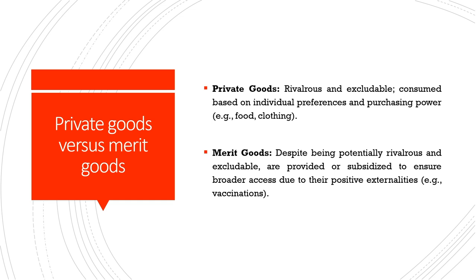We can also distinguish private goods from merit goods. Private goods are rivalrous and excludable, consumed based on individual preferences and purchasing power. Merit goods, despite being potentially rivalrous and excludable, are provided or subsidized to ensure broader access due to their positive externalities. Vaccination is a key example: it is both excludable and rival — my consumed vaccine is not available for anyone else — but the benefits of my vaccination positively protect others from infectious disease, making it a merit good requiring government intervention.